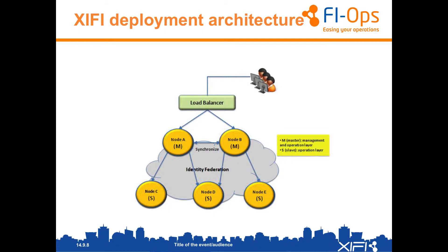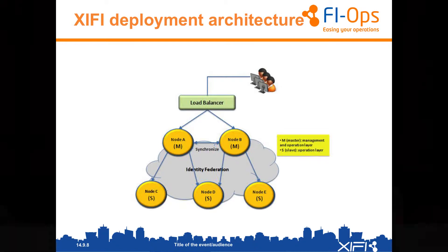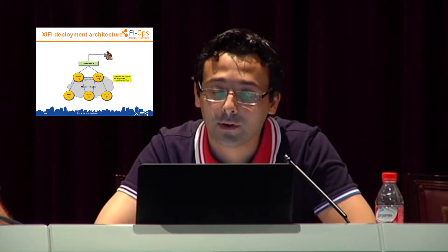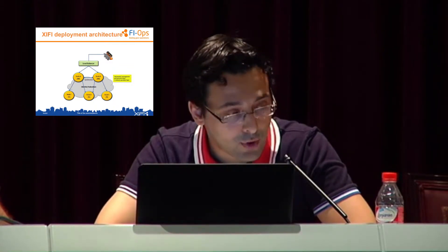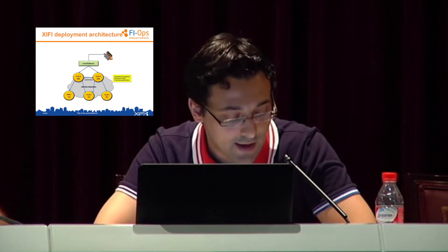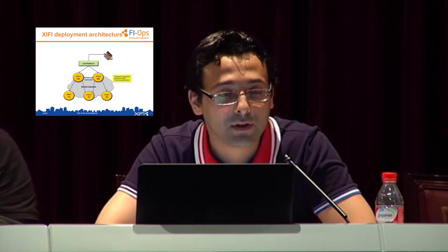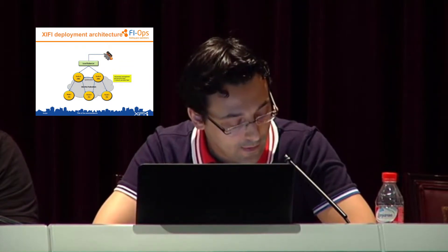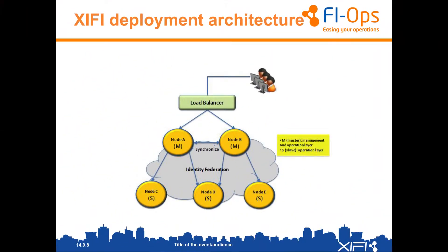A master node has the management and operational services. Meanwhile, a slave node has only operational services. The operational services are a set of fundamental services to support the management of the XIFI platform — for example, computing services and networking services. On master nodes, in addition to slave node services, are deployed the centralized part of the federation services — for example, the federated part of the monitoring services.